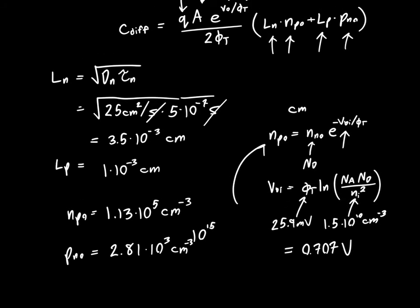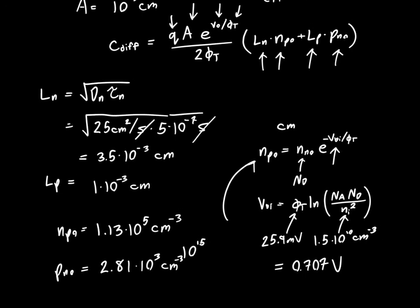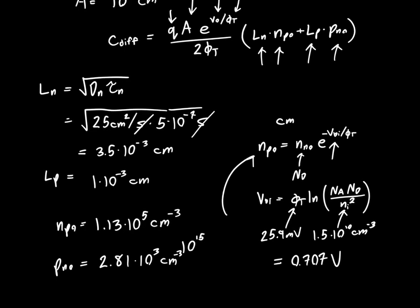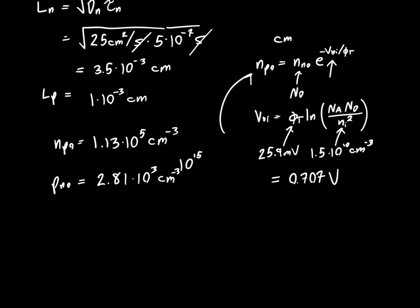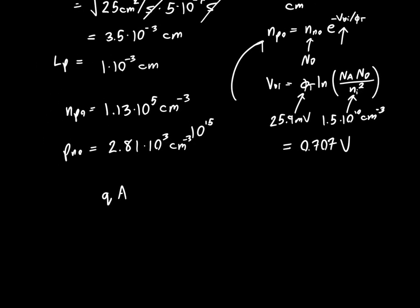Now, all that's left is to plug everything into our original expression for the diffusion capacitance, which we have here above. I'm going to first do a quick units analysis on that equation, just to make sure that everything we're plugging in is safe. So if we just rewrite it here, Q times the area times E to the V naught over Phi T all divided by 2 times Phi T times LN NP naught plus LP PN naught.